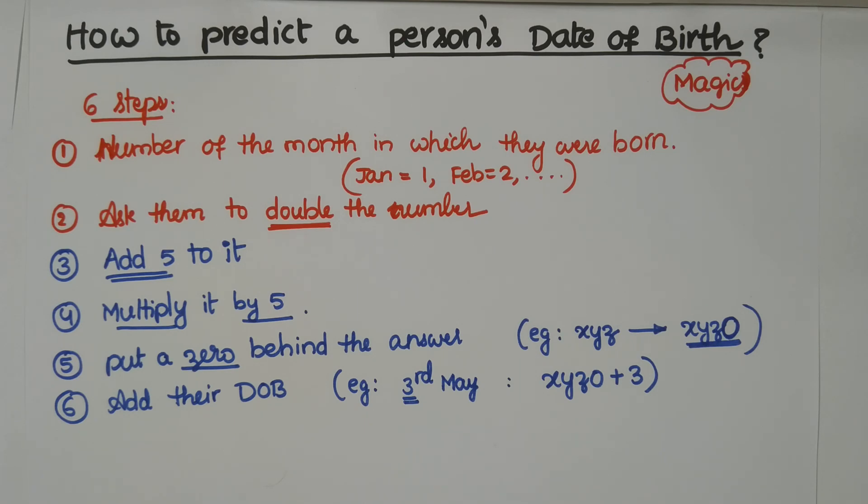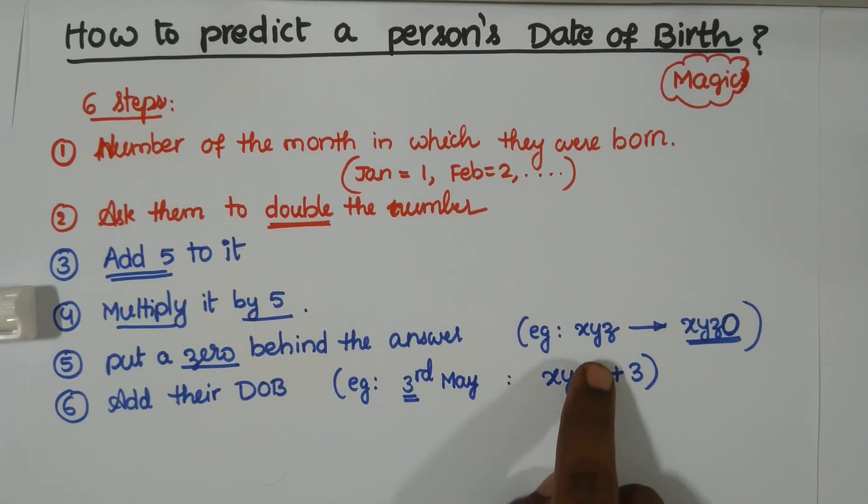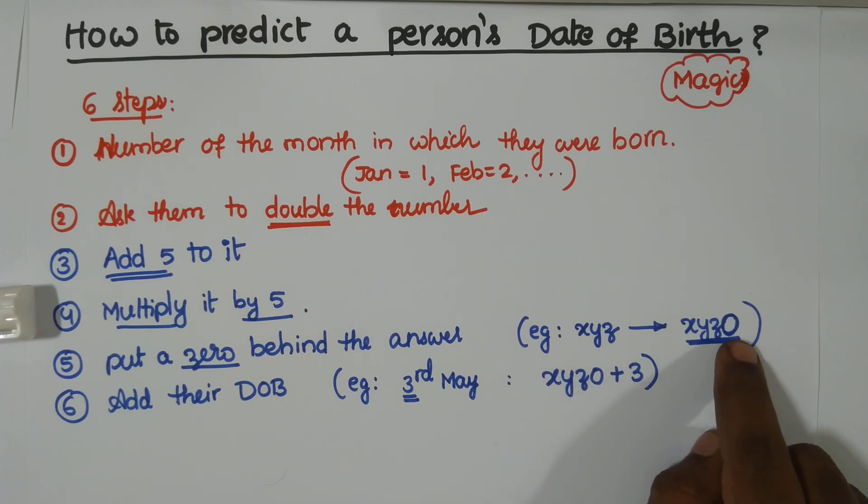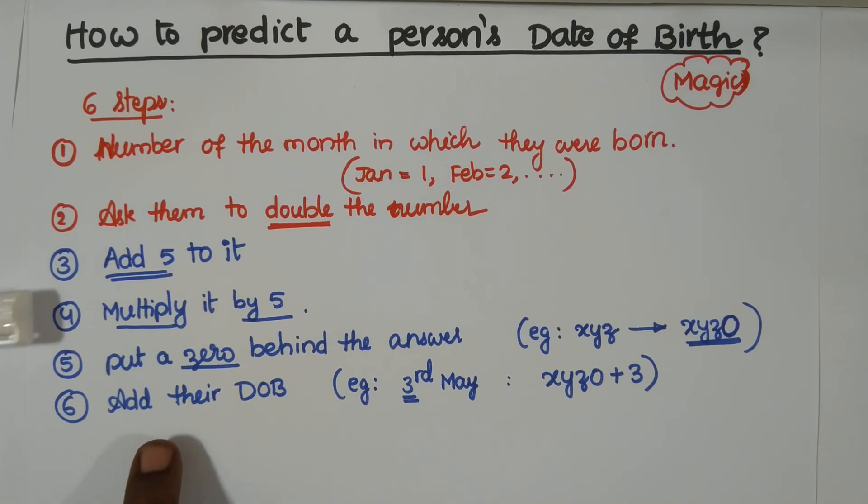Put a zero behind the answer means, for example, in step number four we obtain some answer like x, y, z. Now, to this number x, y, z, just append zero in the unit's place: x, y, z, zero like this. End of the day, you have to add their date of birth. Add their date of birth.